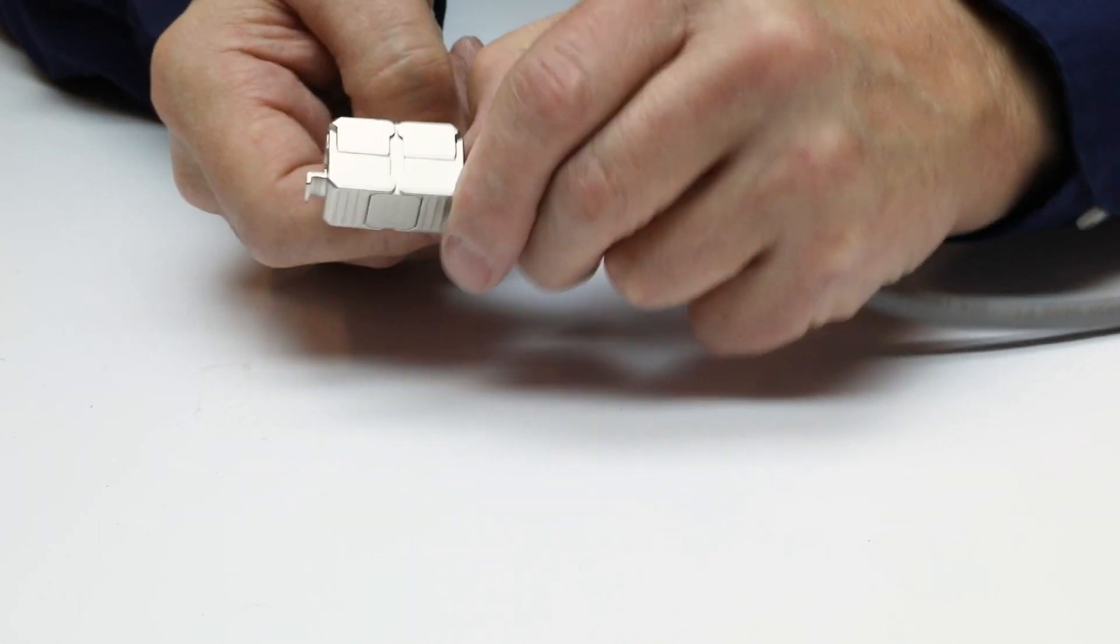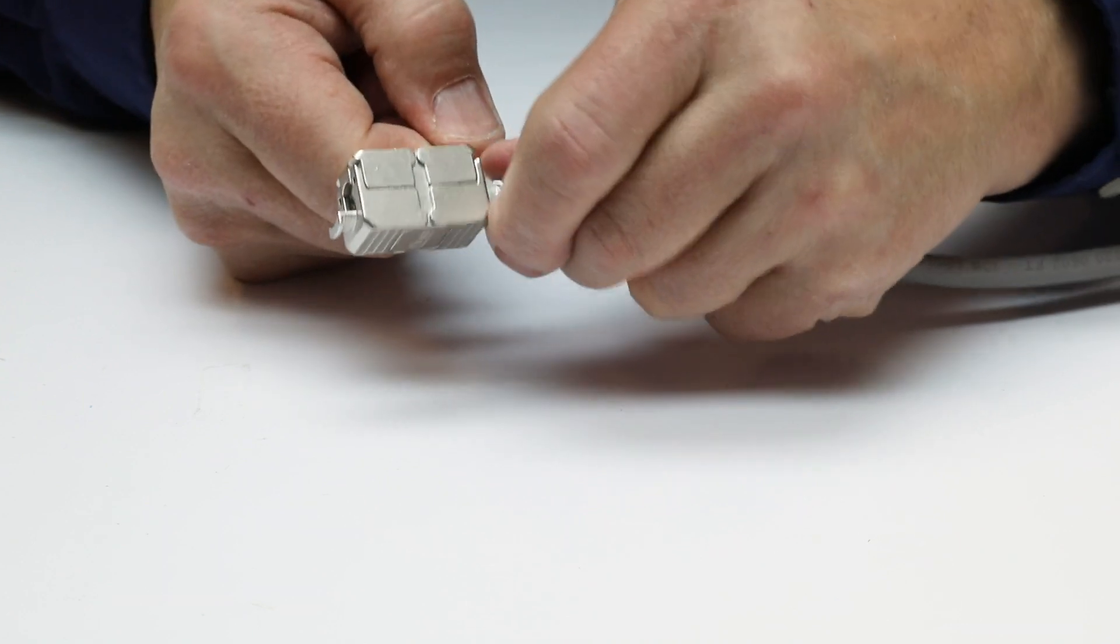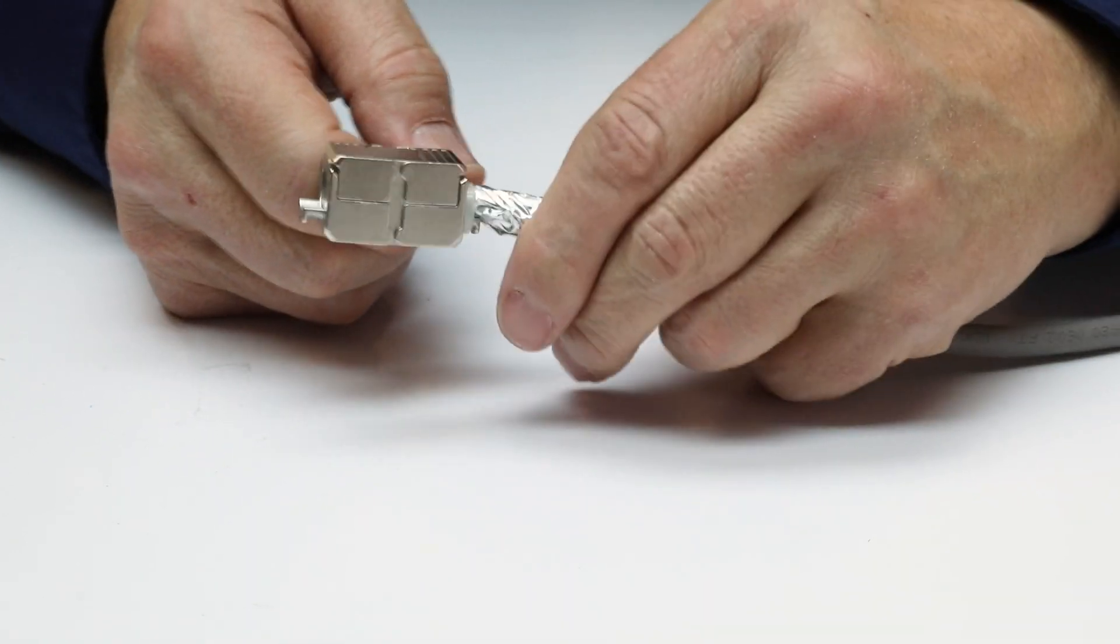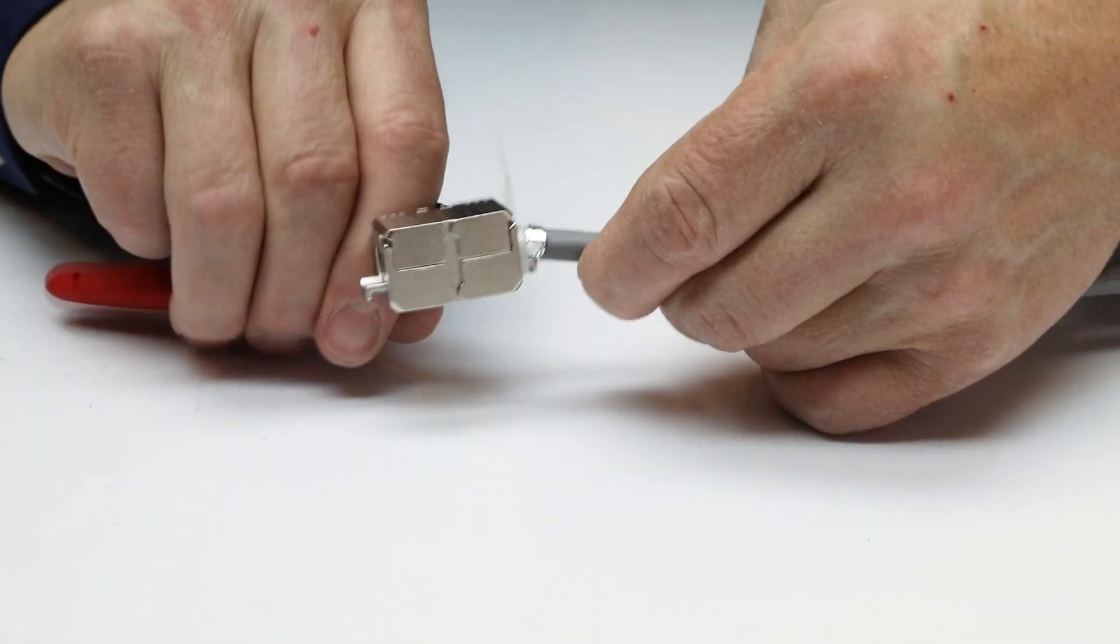Position the cable tie over the drain wire and secure cable and drain wire to the device. It helps to secure the drain wire if the drain and cable tie are wrapped in the same direction. Cut off the excess foil and cable tie tail.